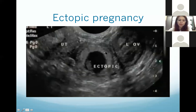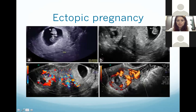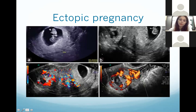This is another case of ectopic pregnancy. Here you can see the uterus and the left ovary, and between them a thick tubal ring-shaped structure with a fetal pole — this is likely a tubal ectopic pregnancy. A typical sign is the ring-of-fire appearance: on Doppler, extensive vascularity is seen all around this tubular structure. This is also a hallmark for diagnosing ectopic pregnancy even when there is no fetal pole inside.